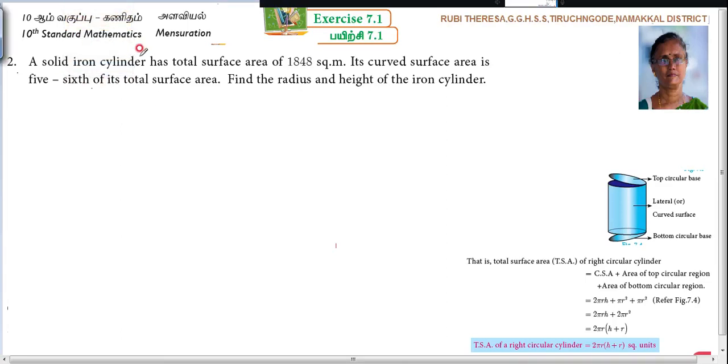A solid iron cylinder has total surface area of 1848 square meters. Its curved surface area is 5/6 of its total surface area. Find the radius and height of the iron cylinder. We follow the data collection.